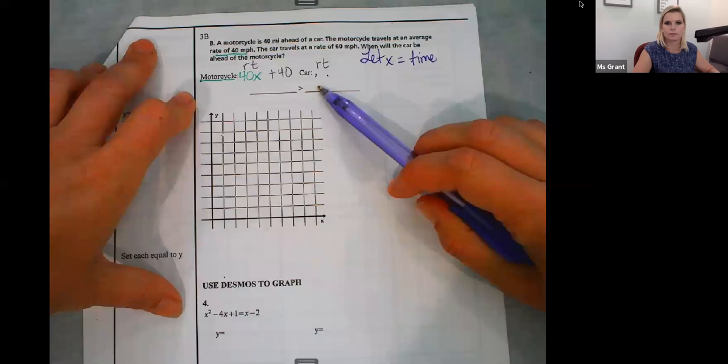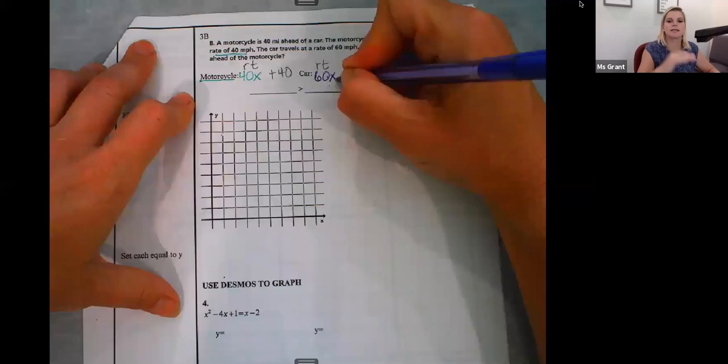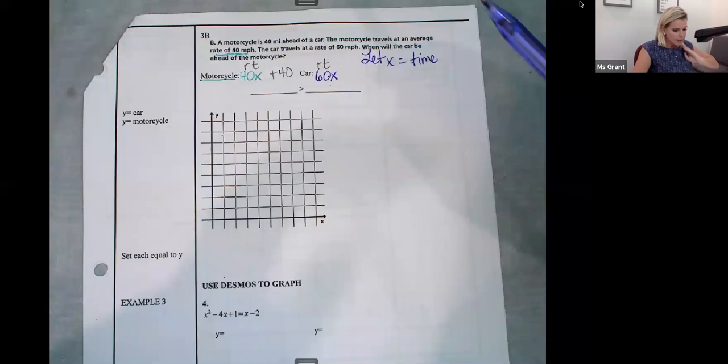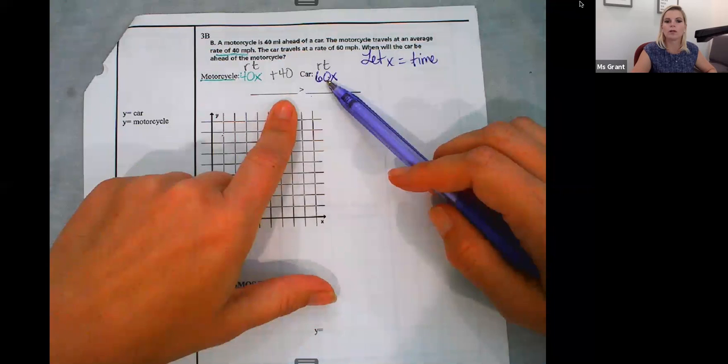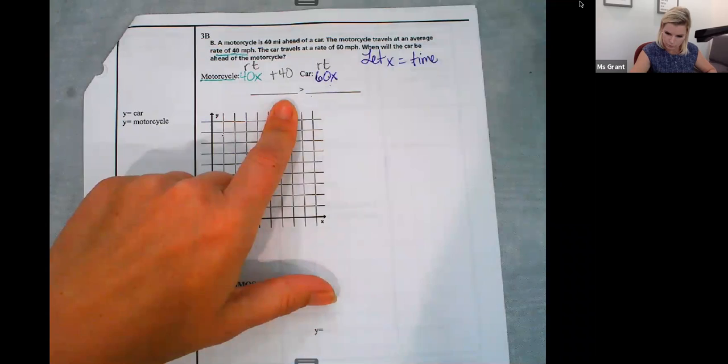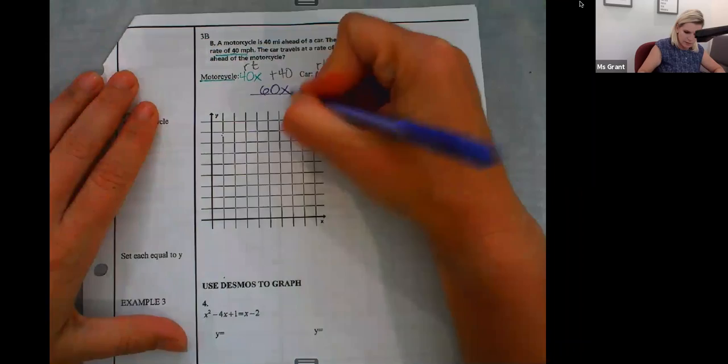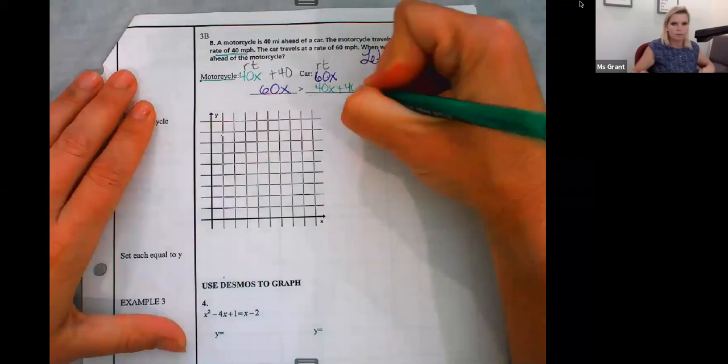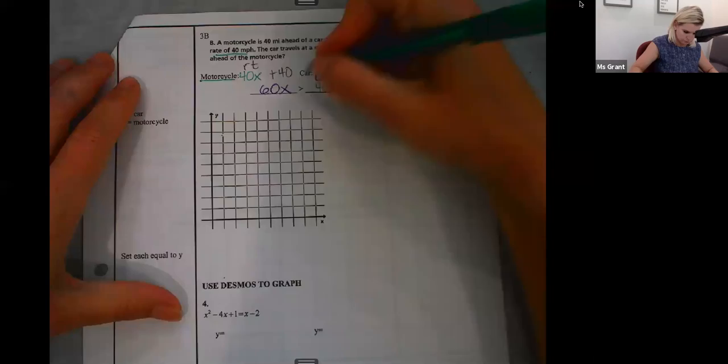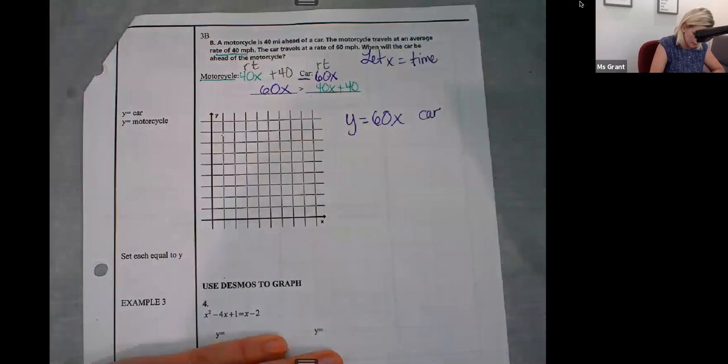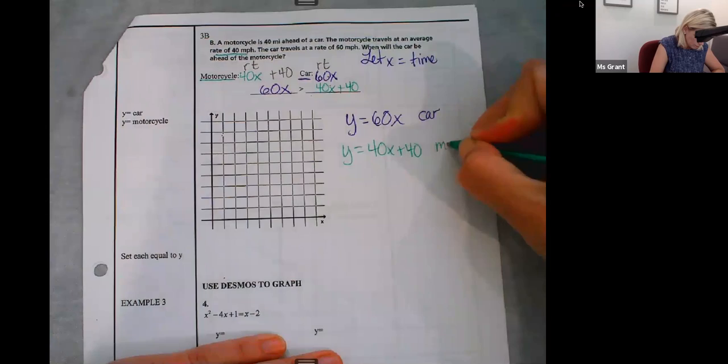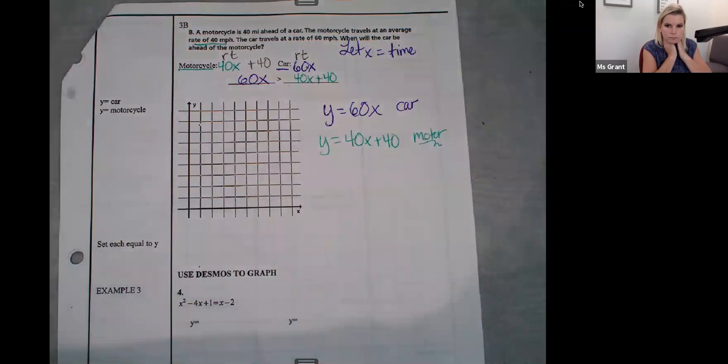So Maribel, what can I put for rate and time for the car? Would it be 60x minus 40? It would be just 60x. I've already taken into account the 40 with the motorcycle here. Now I have these two lines and then a greater than symbol. One of these is faster than the other. Who's faster? Which vehicle is traveling faster? Sam. The car? The car. So I'm going to put the equation for the car is greater than my equation for my motorcycle. So my car is y equals 60x. My motorcycle is 40x plus 40.